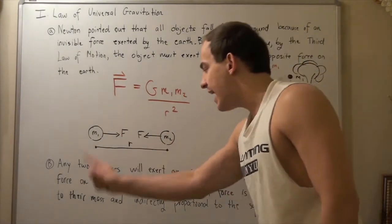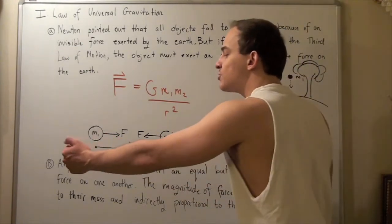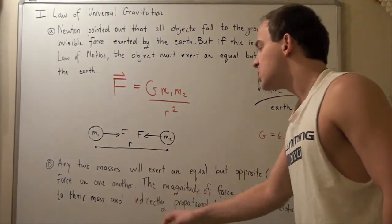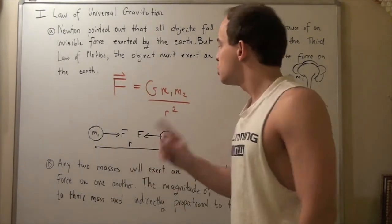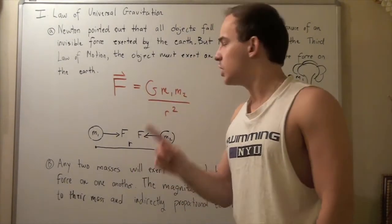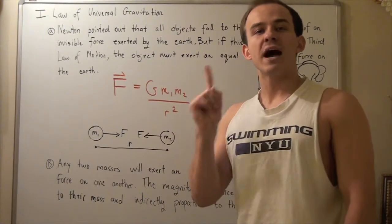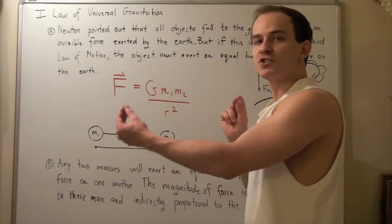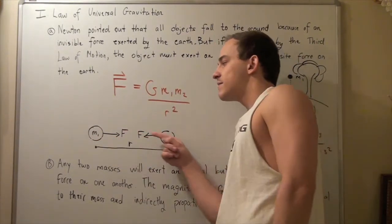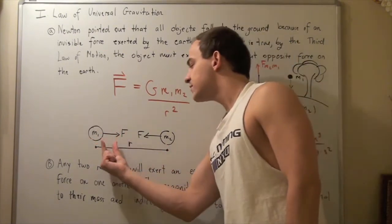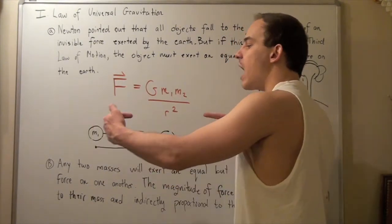Now, any two masses will exert an equal but opposite, and it will always be an attractive force on one another. The magnitude is given by this formula, and the magnitude is directly proportional to our masses, and inversely proportional to our distance between them squared. Since it's always an attractive force, this force will always point toward the center of mass of the other object. So the two forces are pointing in opposite directions.